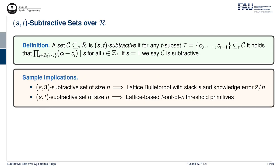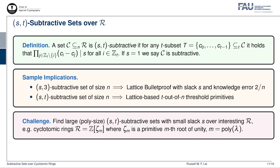Here are some sample implications of S_t-subtractive sets. First, if we have an S_3-subtractive set of size n, we can construct a lattice bulletproof with slack S and knowledge error 2 over n. On the other hand, if we have an S_t-subtractive set of size n, we could construct lattice-based T-out-of-n threshold primitives. The remaining challenge is to construct large S_t-subtractive sets — by large I mean polynomial size — with small slack S over some interesting ring R. In lattice-based cryptography, a popular choice of R would be a cyclotomic ring, which is the set of rational integers adjoined with a primitive m-th root of unity zeta_m, where m is polynomial size.